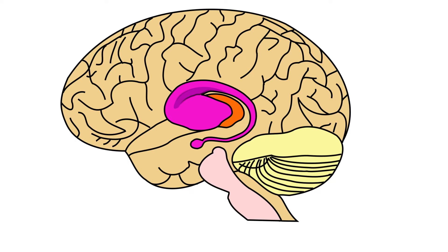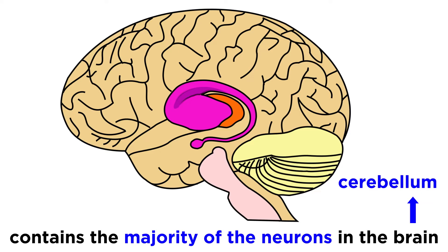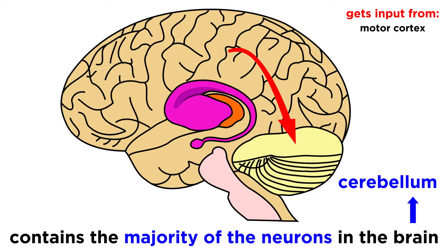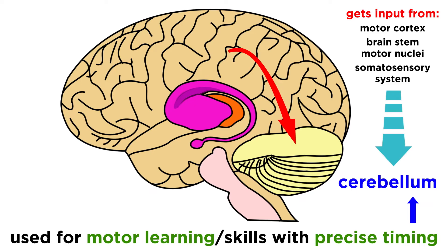Apart from these regions, let's briefly mention two others: the cerebellum and the basal ganglia. These are not part of the pathways we outlined, but they are still important sensory motor structures. The cerebellum contains a disproportionately large number of neurons — actually the majority of the neurons in the brain. It receives information from the primary and secondary motor cortexes, signals from brain stem motor nuclei, and feedback from motor responses through the somatosensory system. It integrates this information and is thus believed to play a role in motor learning when developing skills that require precise timing.